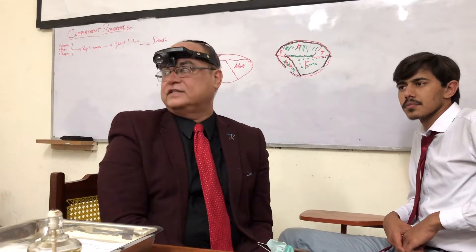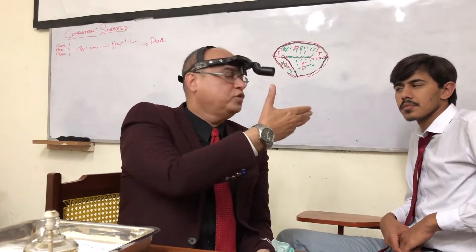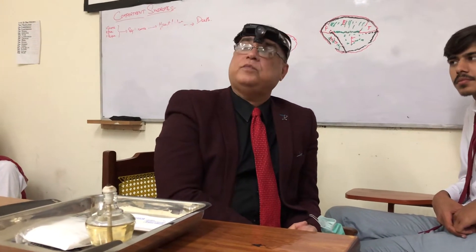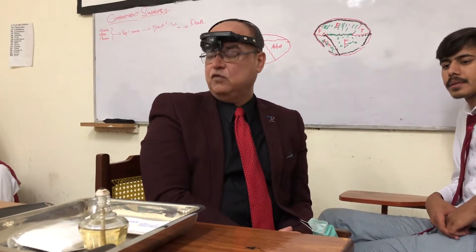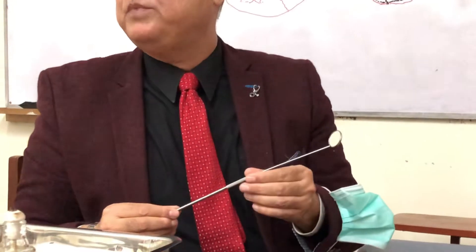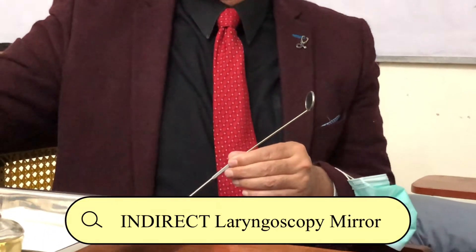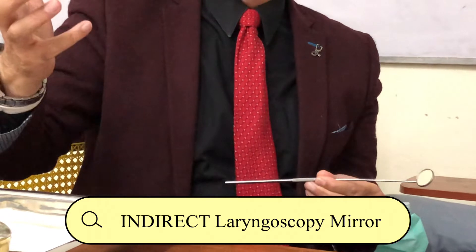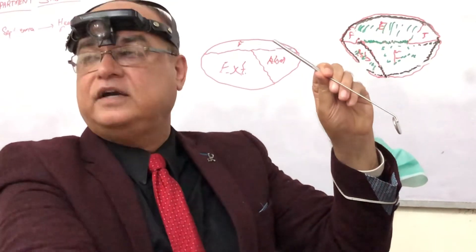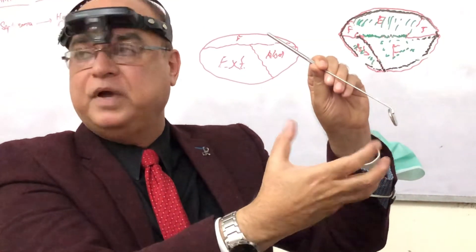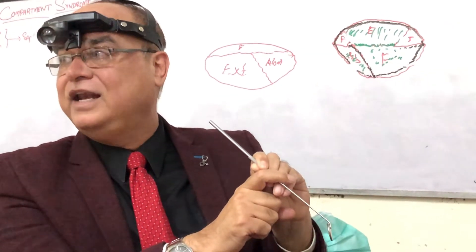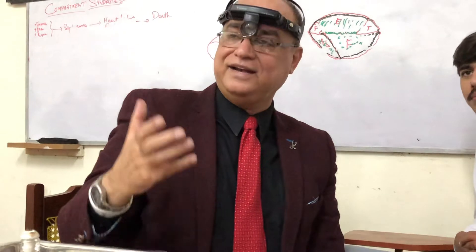Now we are left with the laryngopharynx, which cannot be examined directly. Just like posterior rhinoscopy for nasopharyngeal examination, we have to use a mirror — this time called the indirect laryngoscopy mirror, or IDL. Indirect because the light will be reflected, the larynx will be lit up, and we will see the image of the larynx in the mirror, so we are indirectly visualizing the larynx. Under general anesthesia in the operation theater, we use a direct laryngoscope where we directly visualize the larynx.